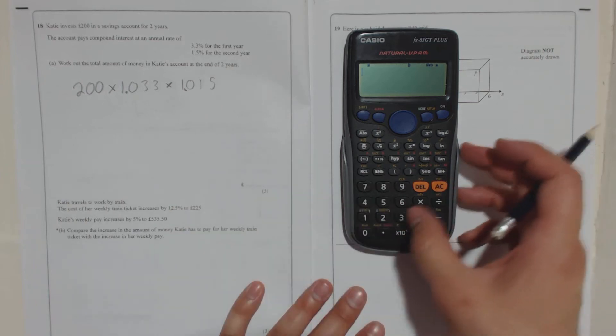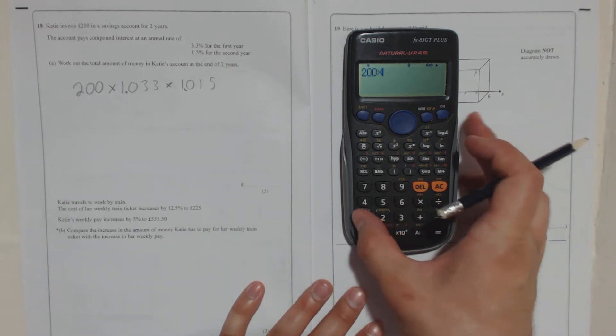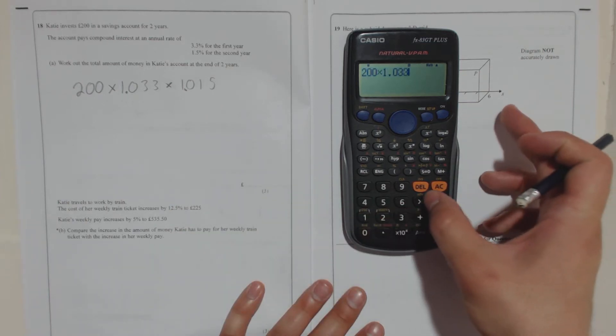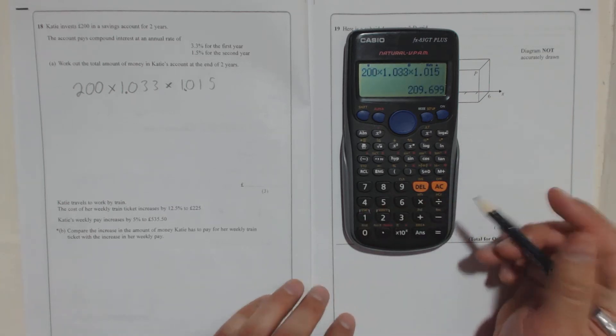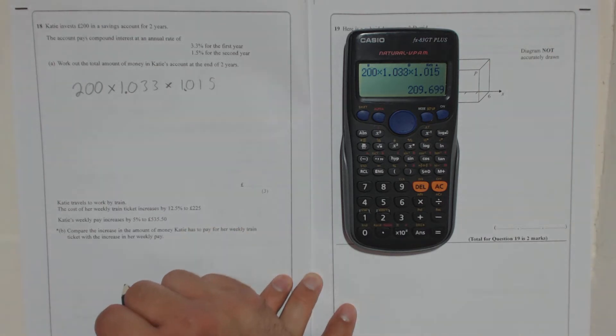So what I'm going to do is I'm going to type all that in. So 200 times 1.033 times 1.015, and our answer is 209.699.